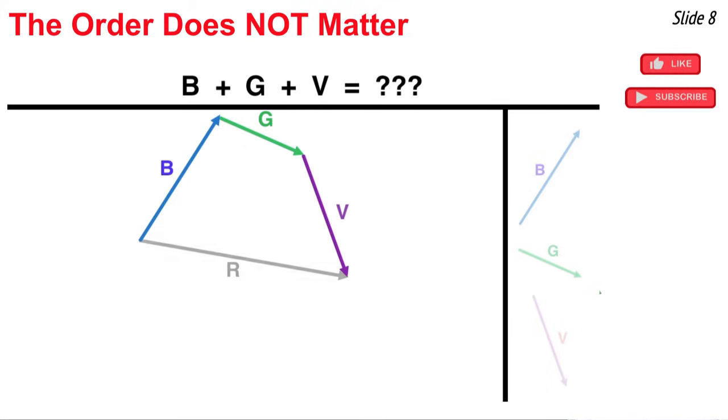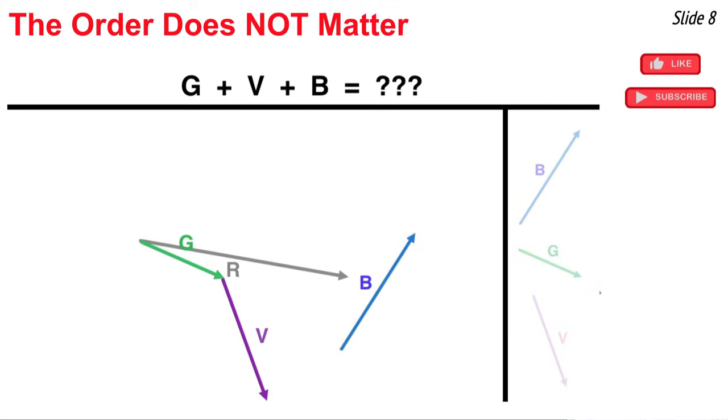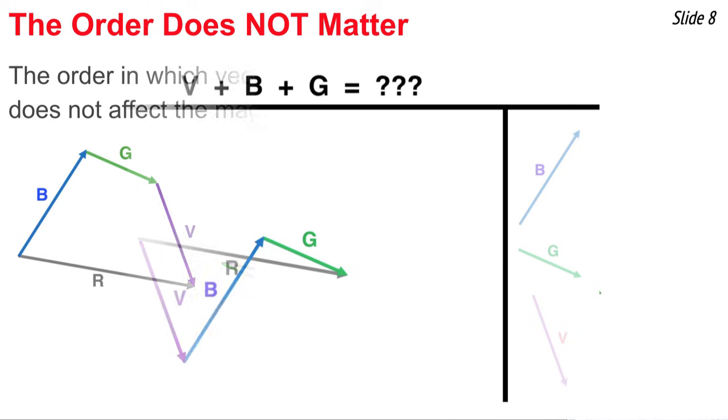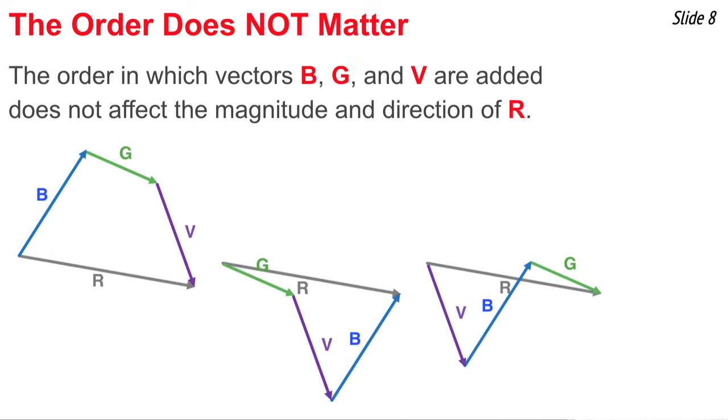Now, this is the resultant of b plus g plus v. But what we're going to do is leave this resultant on the screen and then add the three vectors in a different order. This time, g first, followed by v, followed by b. And when we add it in that order, it's the same resultant when drawn from the tail of g to the head of v. Now, we're going to add it in a third order, v plus b plus g. And once more, when we add it in that order, we get the same resultant. So the conclusion we would make is the order in which we add vectors does not affect the resultant.